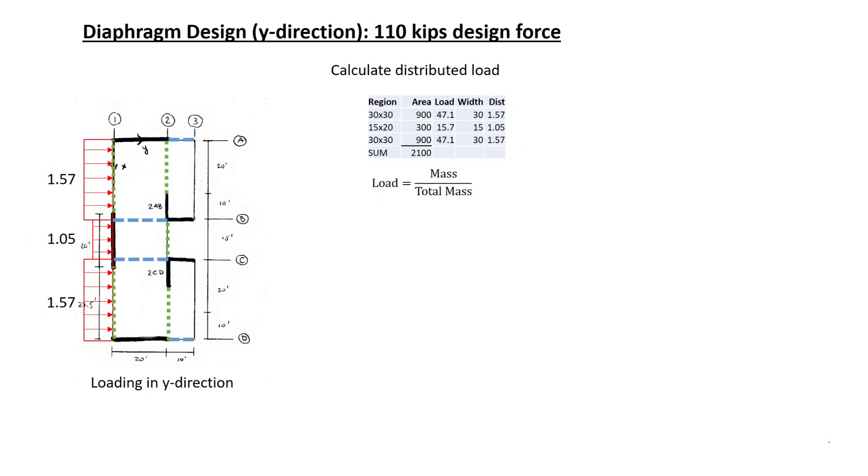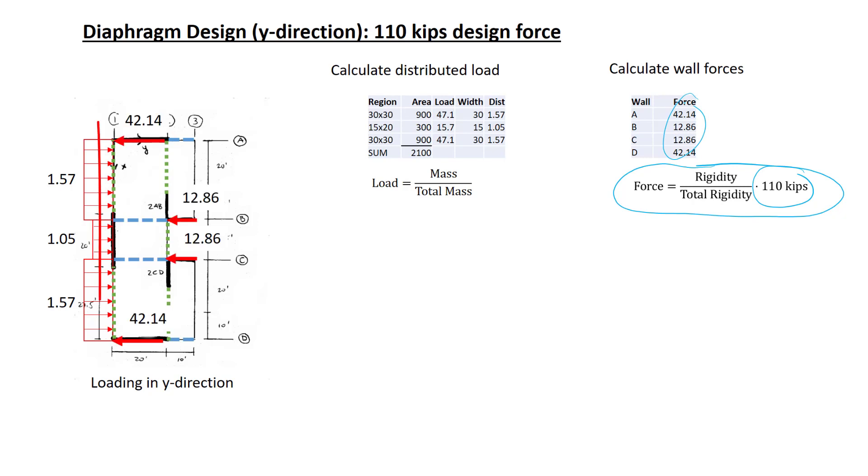Next, we need to find what the forces are in the walls perpendicular to the loading. We calculate the wall forces by this equation, following the principle that the force in the wall is proportional to the rigidity of that wall. The 110 kips here is the design force for a diaphragm design. Because there's no inherent eccentricity, torsion doesn't come into play, and we can simply say that the force in the wall is proportional to rigidity. We have these calculated values. We can locate them on the diagram at each of the respective walls.